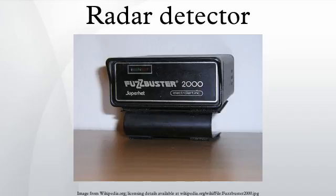Radar detector detectors: the superheterodyne receiver in radar detectors has a local oscillator that radiates slightly, so it is possible to build a radar detector detector which detects such emissions. The VG-2 interceptor was the first device developed for this purpose but has since been eclipsed by the Spectre 3. This form of electronic warfare cuts both ways, since detector detectors use a similar superheterodyne receiver. Many early stealth radar detectors were equipped with a radar detector detector detector circuit, which shuts down the main radar receiver when the detector detector's signal is sensed, thus preventing detection by such equipment.